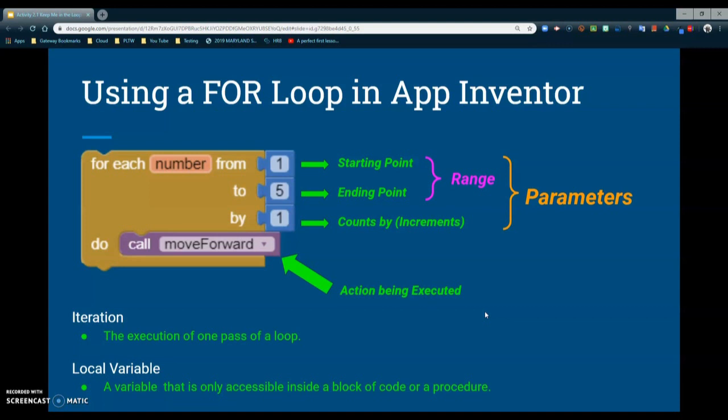If we increase that by to two, it would be counting by every other number. For most of the things we do, we're going to keep that count by to number one. You also have the do portion and this is the action you're going to have performed. In this case we have a call move forward. This is a procedure block that's hiding unnecessary information to get the bus to actually move. We will take a closer look at what that procedure looks like in our next tutorial.